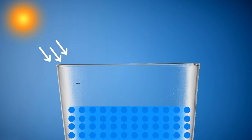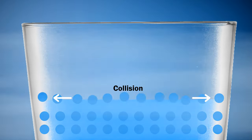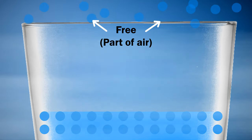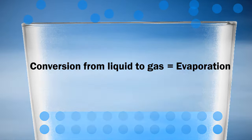After gaining sufficient energy, these surface molecules sometimes detach from the surface and become free. Sometimes, collision of air particles detach them from surface. As they detach, they become free and become part of air. Such way of conversion from liquid to gas is called evaporation.